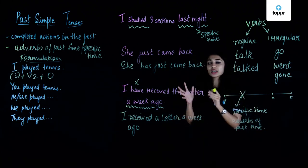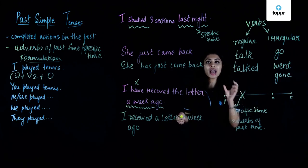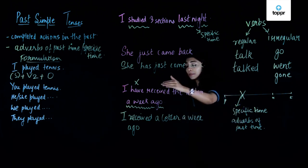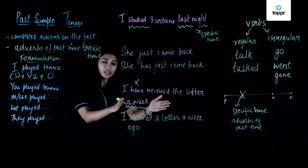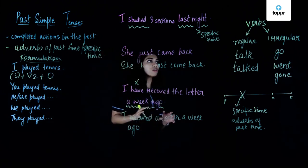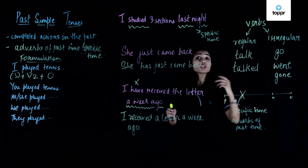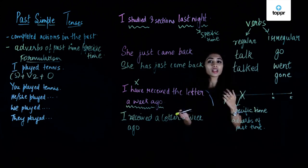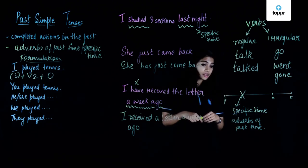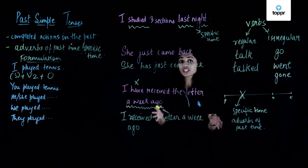Major takeaways from the past simple tense: it is used for completed actions in the past, but with definite time expressions. When a past adverb is given, do not use it with the present perfect tense. Also, remember to go through the regular and irregular verbs — refer to a grammar book for the irregular verb list. That's it for the past simple tense. Now let's move on to the past continuous tense.